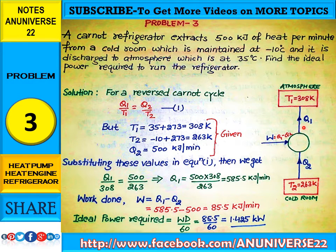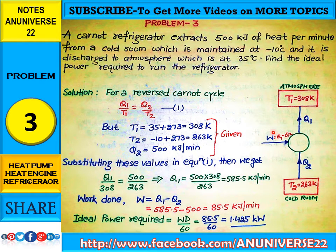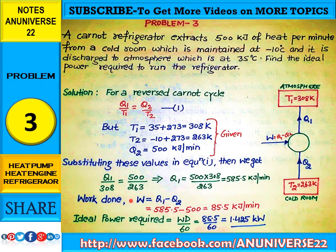Q1 has been calculated and Q2 is given. So we can find the value of W, where W equals Q1 minus Q2. The work done is equal to 585.5 minus 500, that is 85.5 kJ per minute.